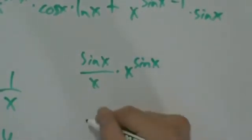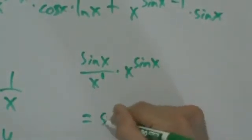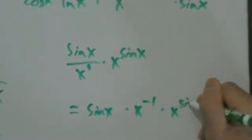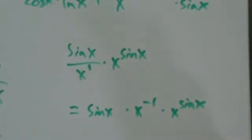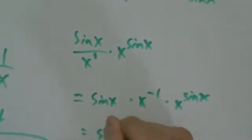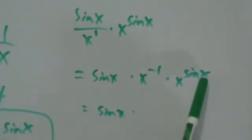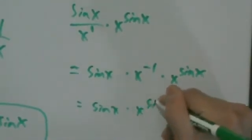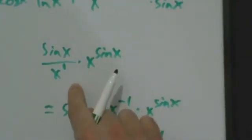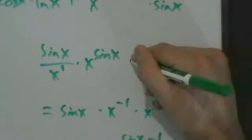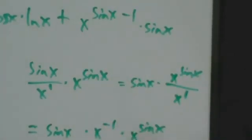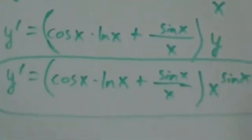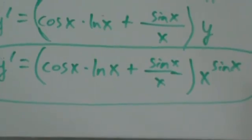For those curious about the simplification: dividing by x is x to the first, which is the same as saying sine of x times x to the negative one, times x to the sine of x. Since the bases are the same, the exponents add: negative one plus sine of x. Alternatively, x to the sine of x over x to the first means exponents subtract, giving sine of x minus 1. That's where that comes from. For most purposes, it's fine to leave your answer in the earlier form. That's example two.